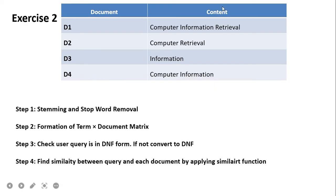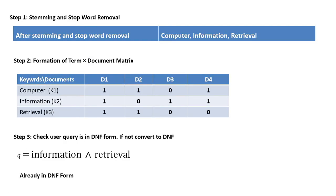Now for Exercise 2: four documents are given — 'computer information retrieval,' 'computer retrieval,' 'information,' and 'computer information retrieval information.' We again follow four steps: stemming and stopword removal, formation of the term-document matrix, checking/converting the query to DNF, and applying the similarity function. After stemming and stopword removal, the three keywords are: computer, information, retrieval — as there are no stop words and the words are already in base form. The term-document matrix is then formed with terms k1, k2, k3.